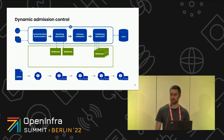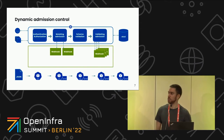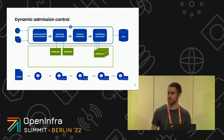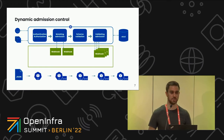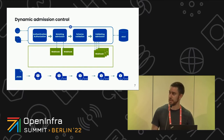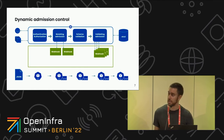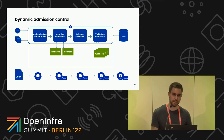Victor takes over: We've seen the primer on Sigstore and secure supply chain. Now, how do we implement that in a cluster? We have a cluster — the first blue box on top — with users on the left and etcd on the right. There's a concept in Kubernetes called a dynamic admission controller, which allows us to put webhooks that connect to the mutating and validating admission stages when you make a request to the cluster.